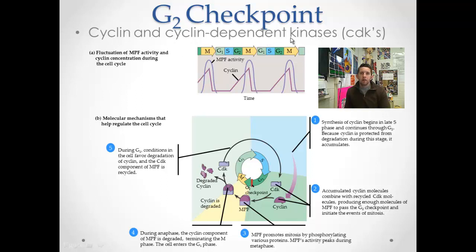The CDKs, their level stays constant within the cell. The level of CDK does not fluctuate, but the level of cyclin does. I'll say that one more time. CDK, the levels don't fluctuate, they stay constant, but the levels of cyclin fluctuate. CDK is inactive without cyclin, it's an inactive enzyme. But when it bonds with cyclin, it produces an MPF complex, which is a maturation promoting factor. It's going to promote this cell to continue maturing through mitosis.